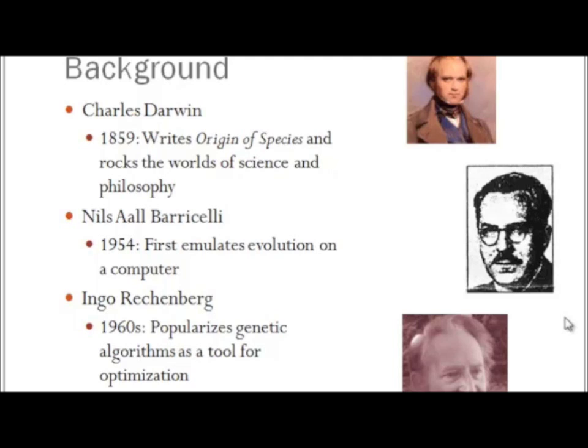A few years later, in the 1960s, Ingo Reckenberg latched onto this idea of the genetic algorithm, but realizing that this was much more generalizable. The process of evolution is an algorithm not restricted to the world of biology, he recognized, but something that can be applied to any optimization problem.